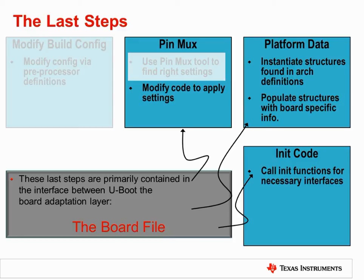Once the pin mux register values have been determined, the uBoot source code must be updated to reflect the new settings. This step, as well as the majority of the remaining peripheral configuration, is performed in the board file. The board file is a configuration file that provides the top-level interface to the board adaptation layer, which is the portion of uBoot source code that drives the device peripherals. In many cases, hardware changes can be completely managed from within the board file, although for more drastic hardware changes it may be required to modify the board adaptation layer itself.